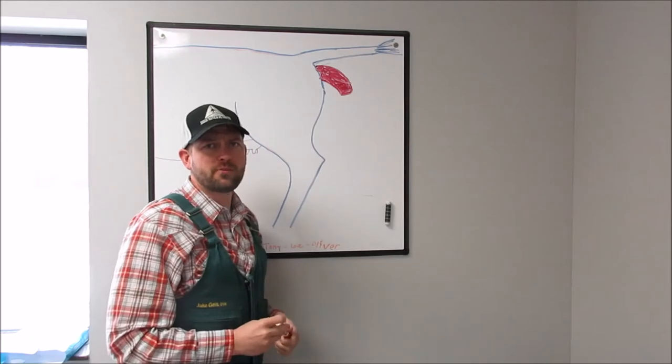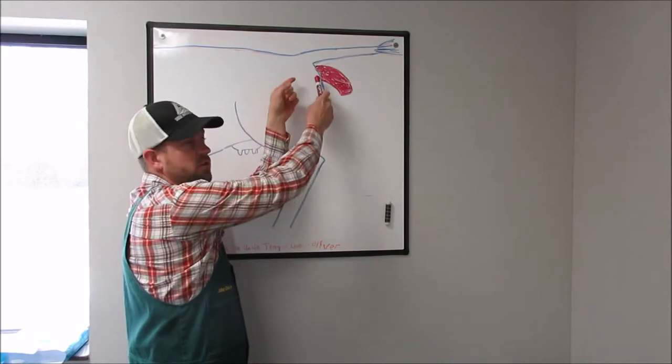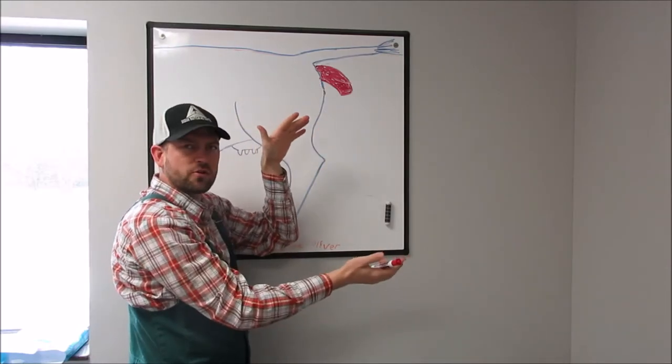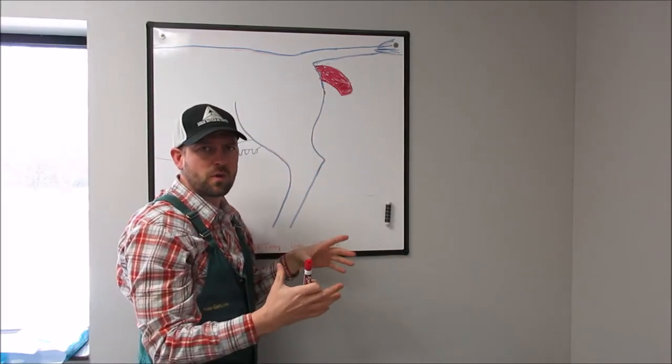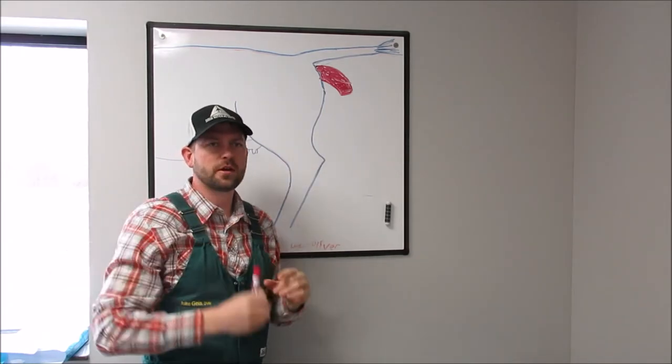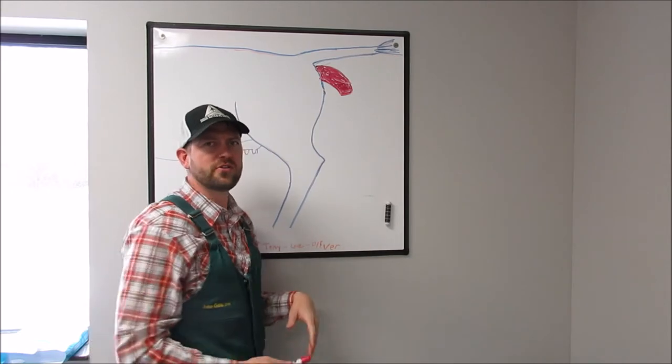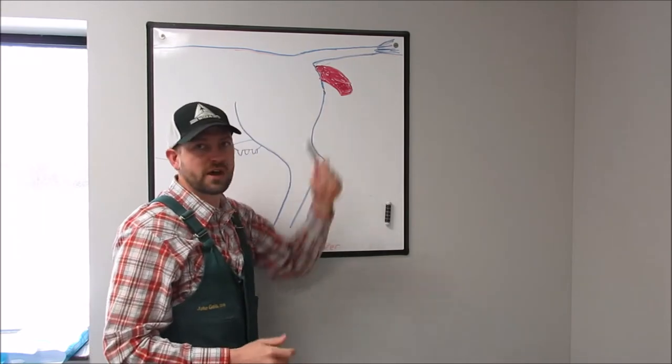So the rectal prolapse is a protrusion of the rectum out of the cow, or steer potentially. You'll see it as being something that's cylindrical shaped, unless it's been out for a little while, then it'll actually start to swell and be more circular. It will be somewhere between 6 to 12 inches in length, and obviously comes out of the rectum.